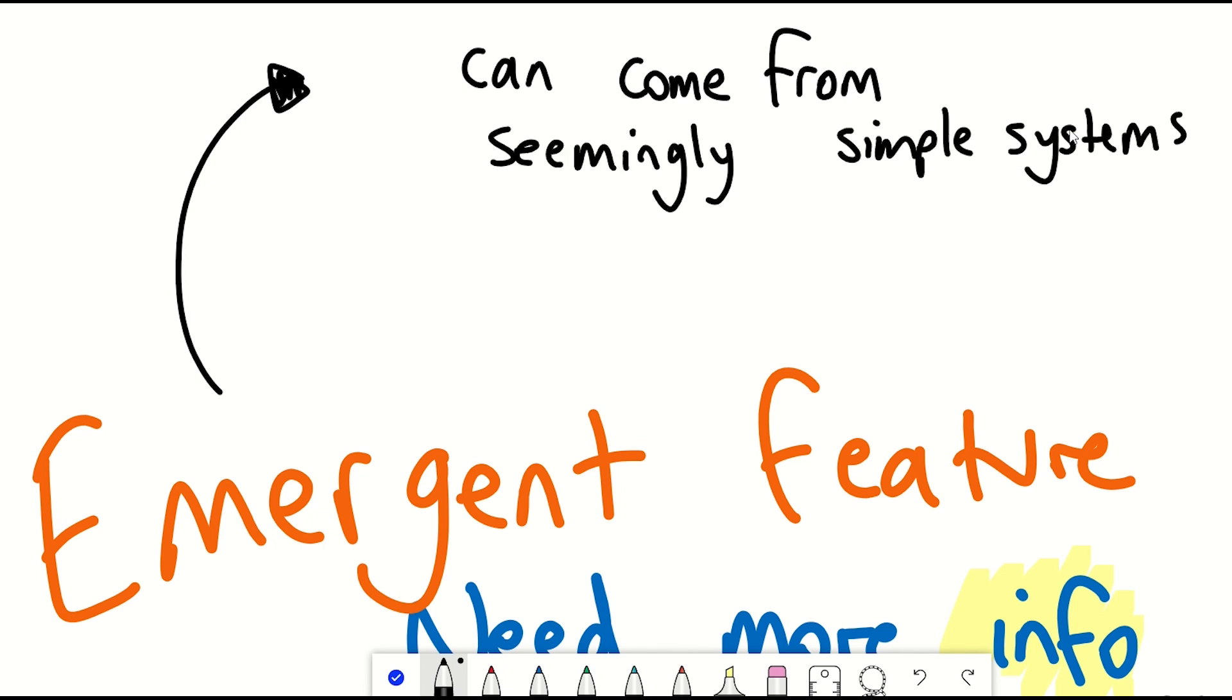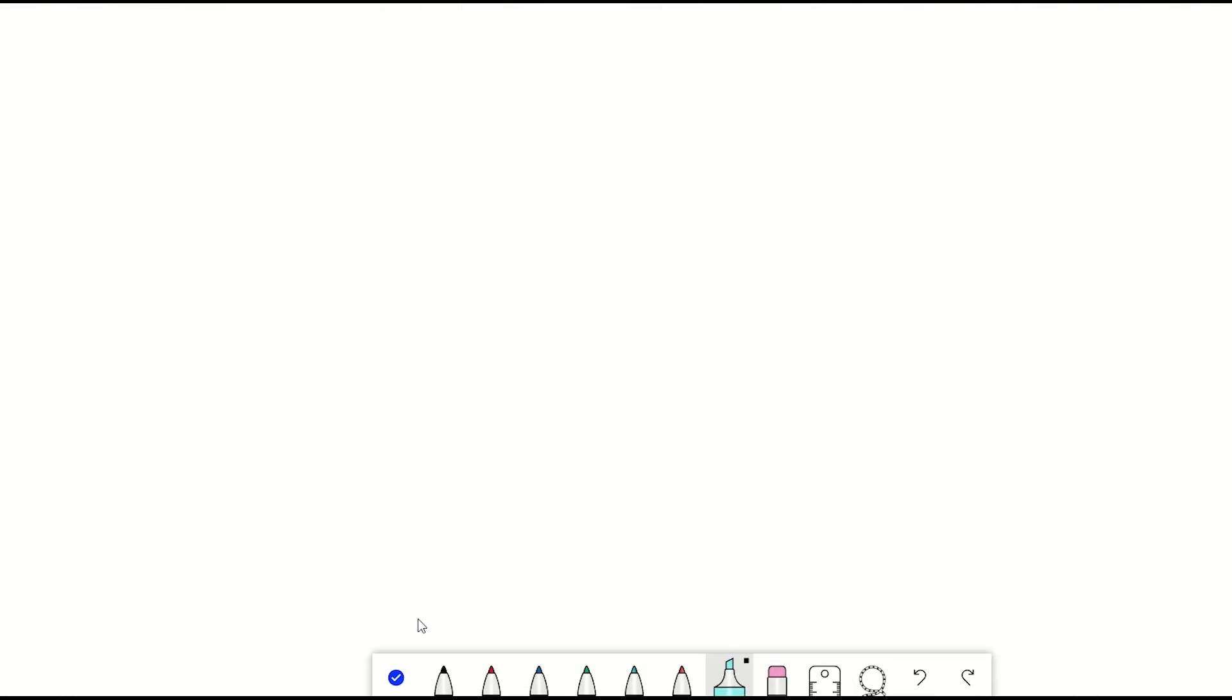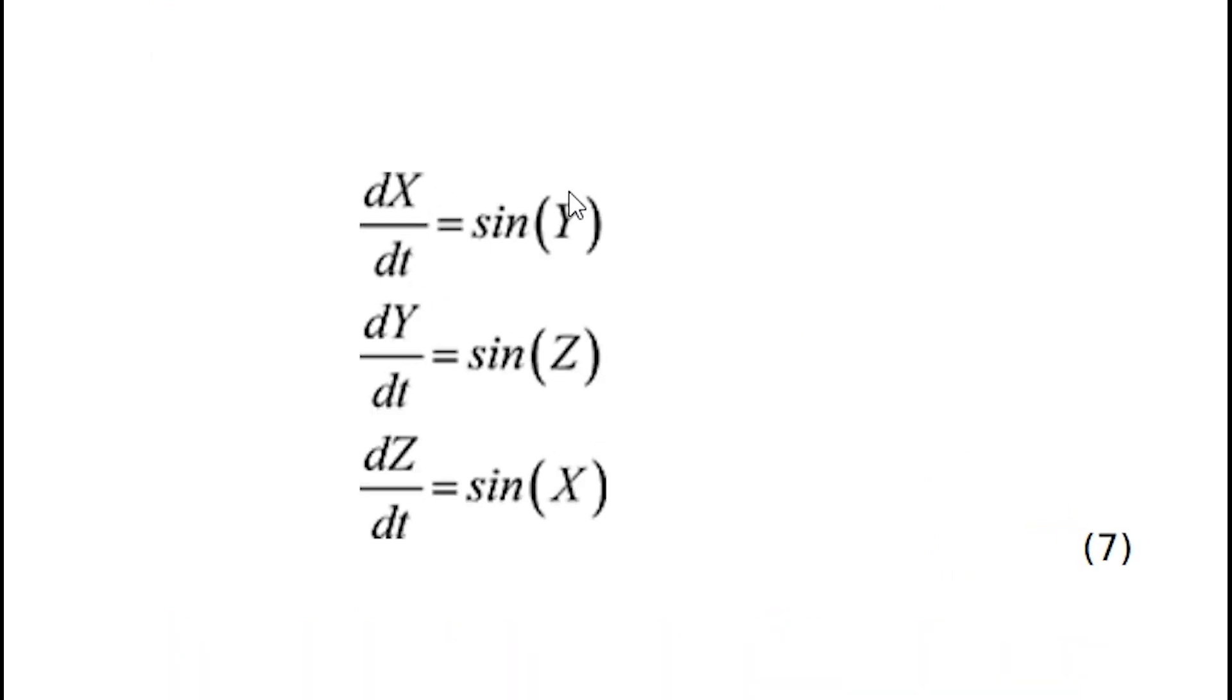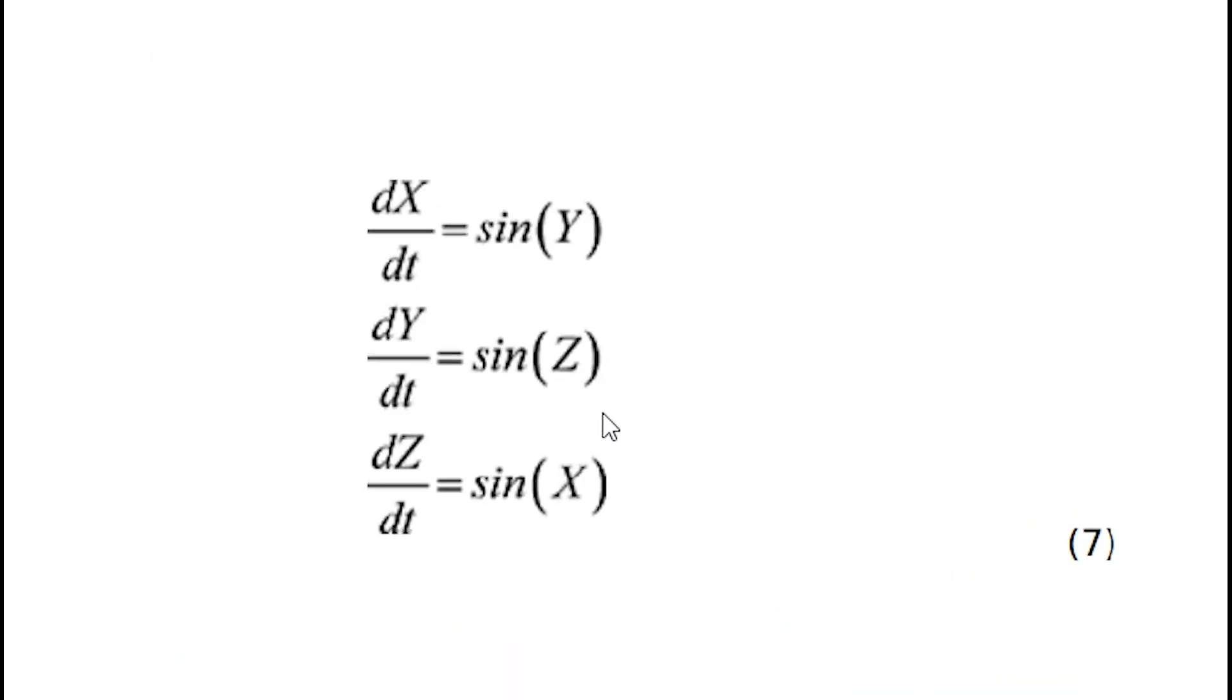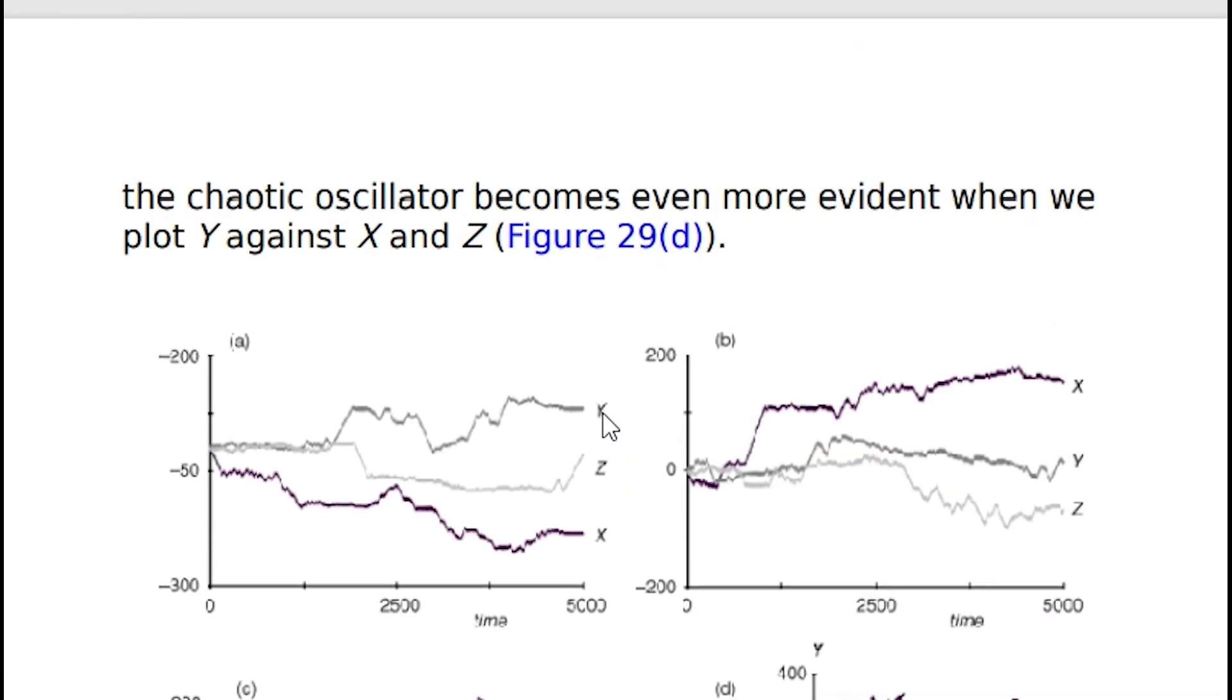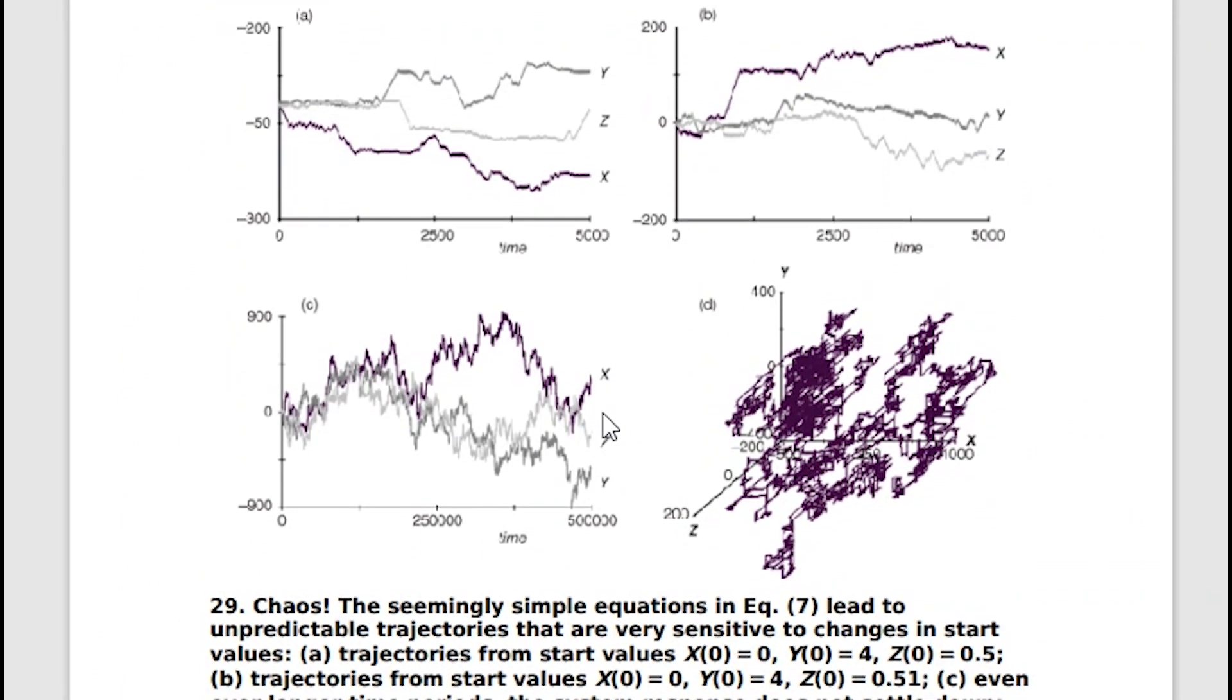Emergence can come from seemingly simple systems that display unpredictable chaotic behaviours. Systems biology can help us understand them by formulating equations that define the system. Again, from three apparently simple sets of equations, which trust me, although they look for non-mathematicians quite bad, they could be much worse. And if you start with different values of X, Y and Z, you end up with very different trajectories. And some of them can end up very complicated.